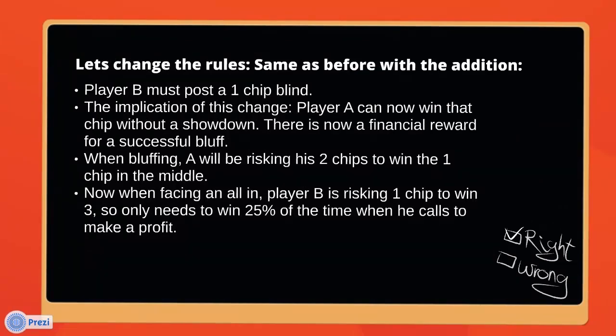So let's go back to that simple game. We'll now say that player B has to post a blind — one chip — and he only has two chips, so that's half his stack. Player A can now win a chip when he bluffs and player B folds. So there's now a financial reward for a successful bluff, a logical incentive for A to bluff. When he does bluff, he'll be risking his two-chip stack to win the one chip out there, so he'll need to win two thirds of the time to make a profit. And when A goes all-in, B will have to call one chip to win the whole pot of three, so he only needs to win 25% of the time when he calls to make a profitable call.